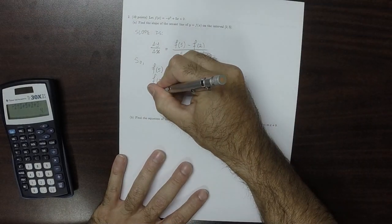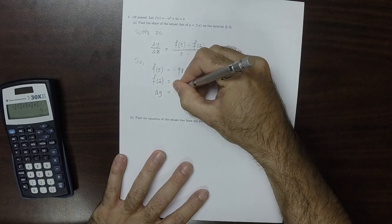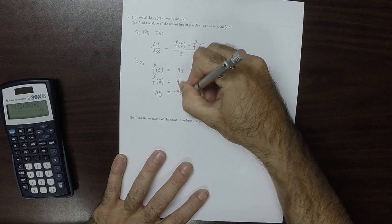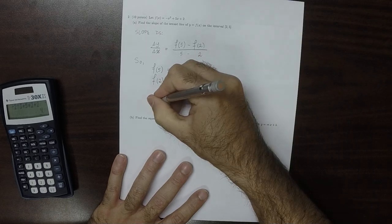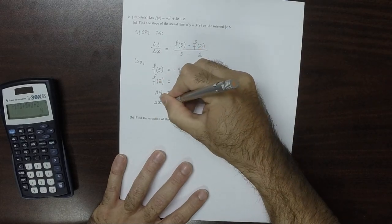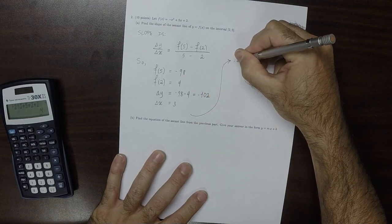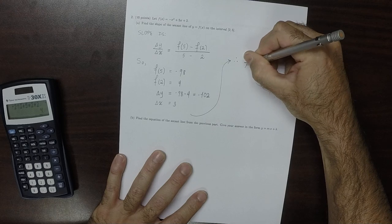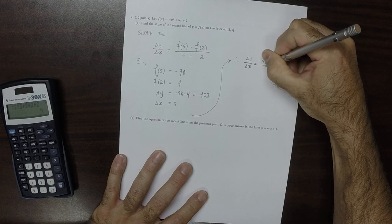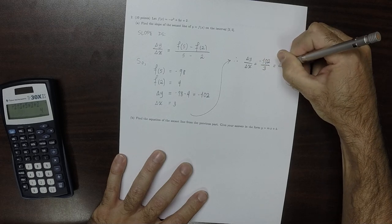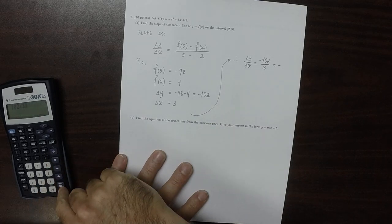And therefore, the change in y is negative 98 minus 4, which is negative 102. And the change in x, 5 minus 2, that's 3. And therefore, the answer is change in y divide by change in x, equal to negative 102 over 3, which is negative 34.